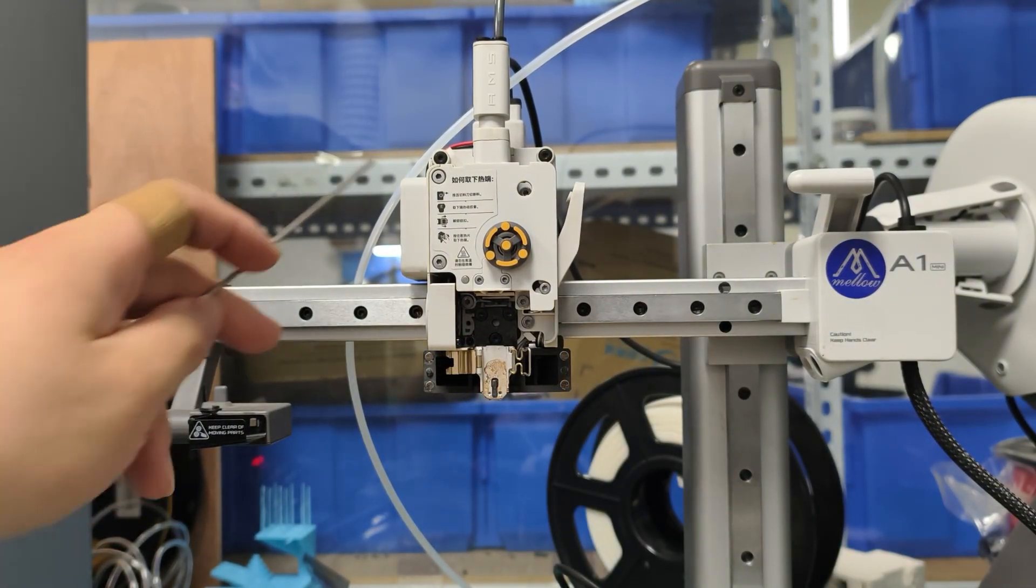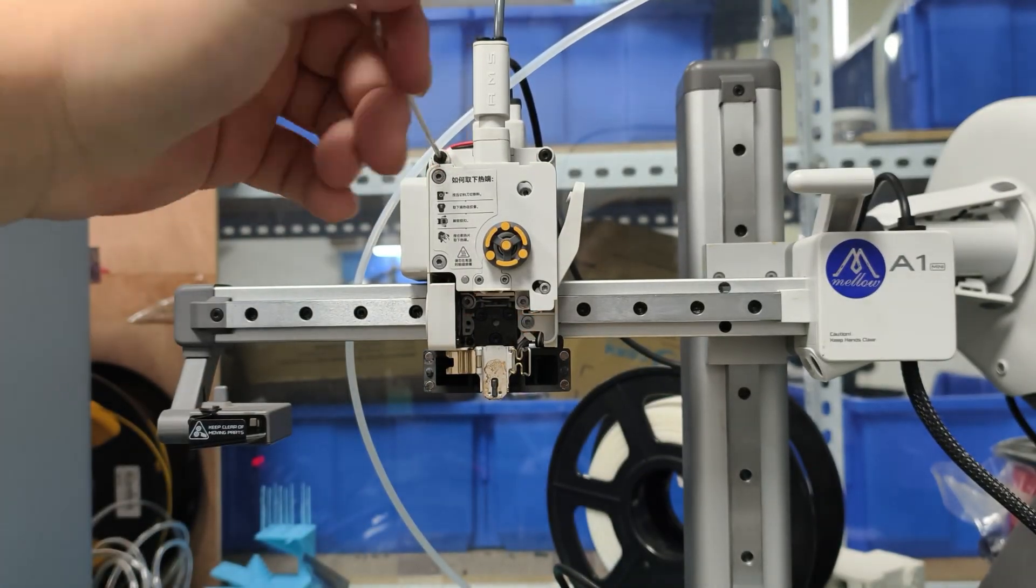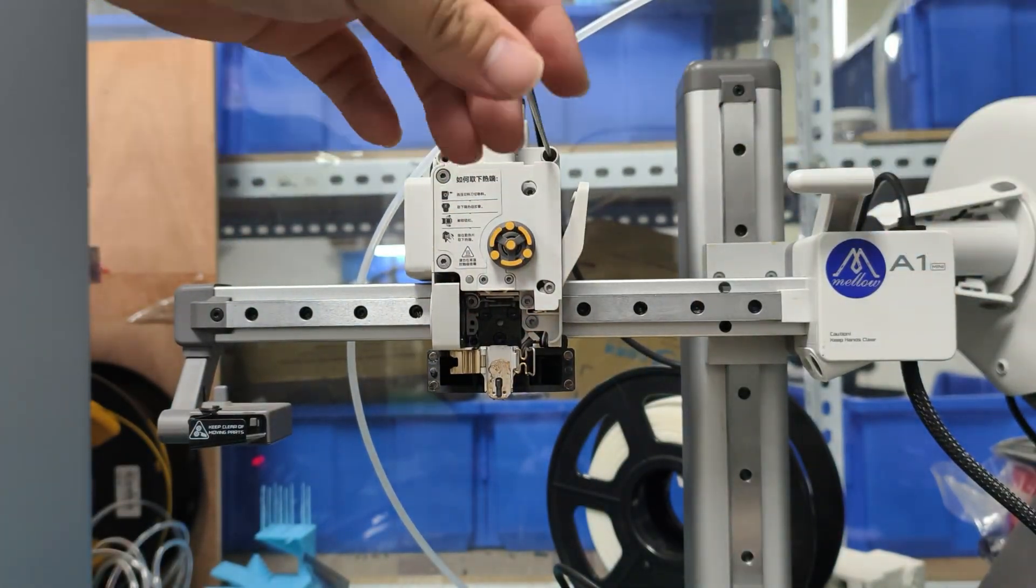Let's get these four screws out of the way. Grab your 1.75mm Allen key. That's what we need right here.